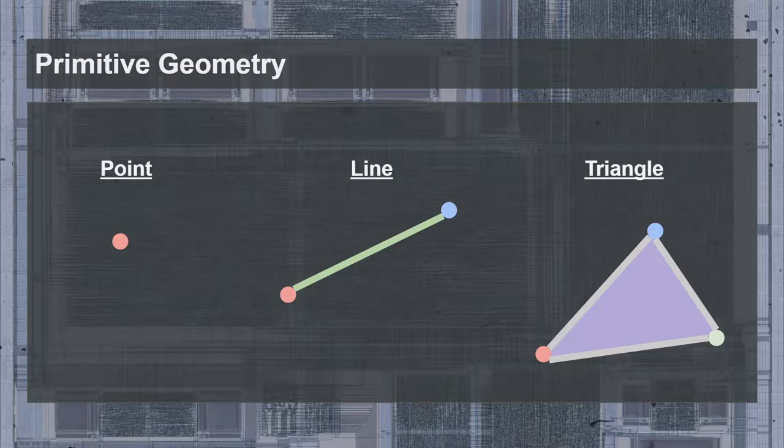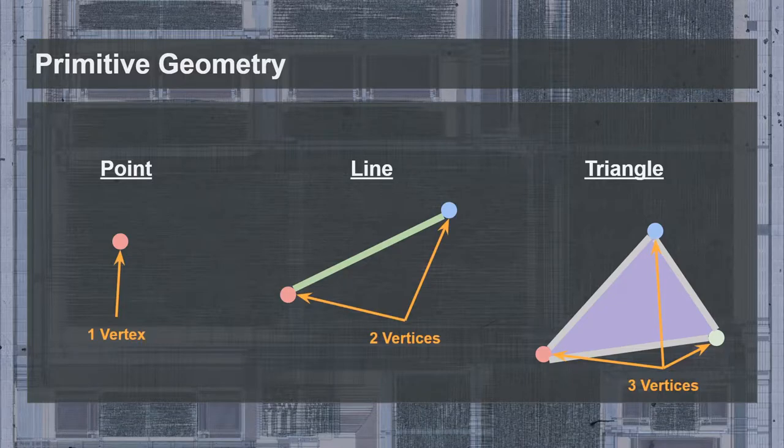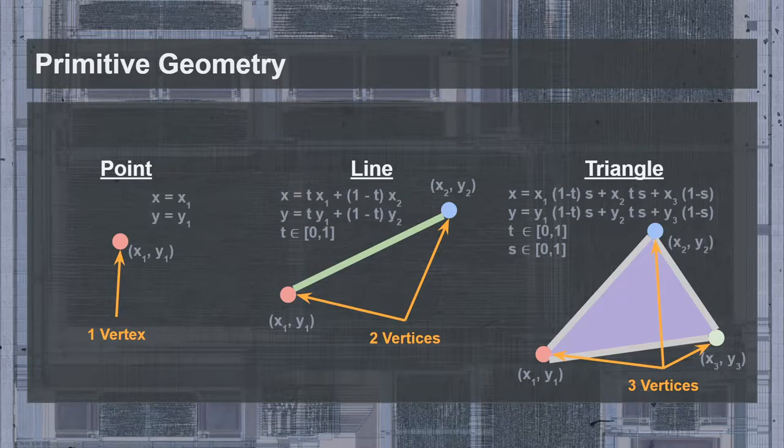These primitive shapes are defined by their vertices, where a point only has one vertex, a line has two vertices, and a triangle has three. That's all that's necessary to describe these shapes mathematically, but this video isn't about the math. This is just to show that they can be described, and that the description gets more complicated as more vertices are added. So if these shapes can be described mathematically, then what's the problem?